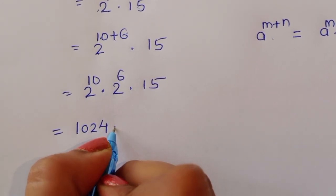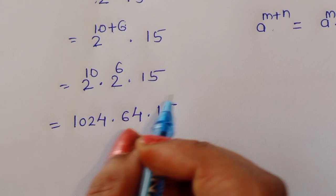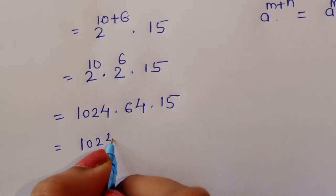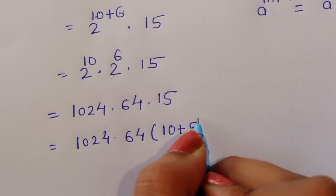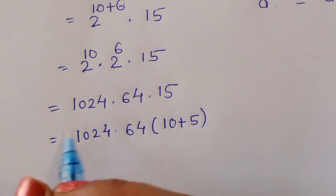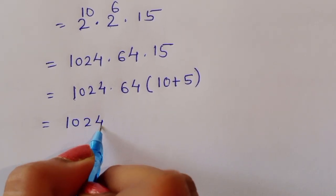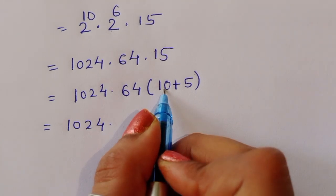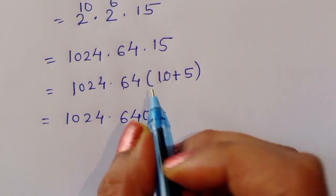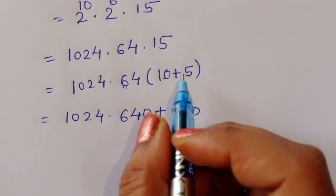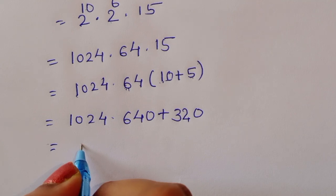Now 2 power 10 is 1024, and 2 power 6 is 64, times 15. We can write 15 as 10 plus 5. So we have 1024 times 64 times 10, which gives 640, plus 1024 times 64 times 5. 5 fours are 20 and 5 sixes are 30, so 64 times 5 gives 320.